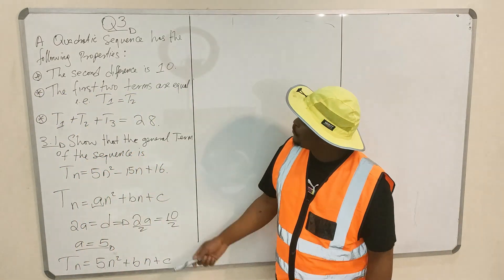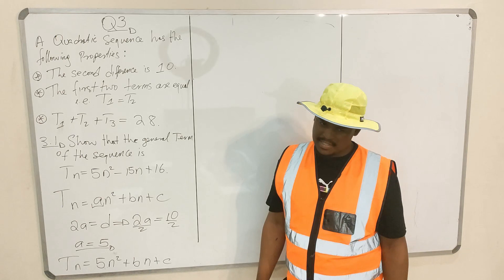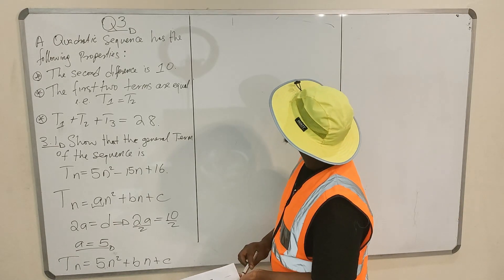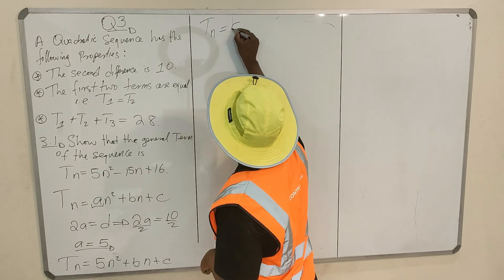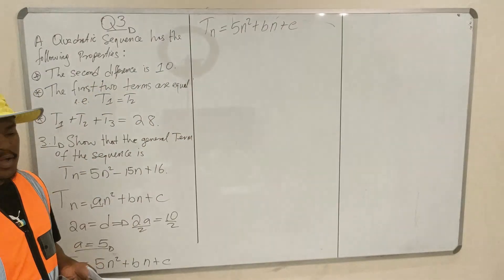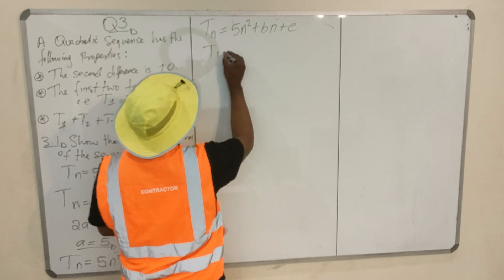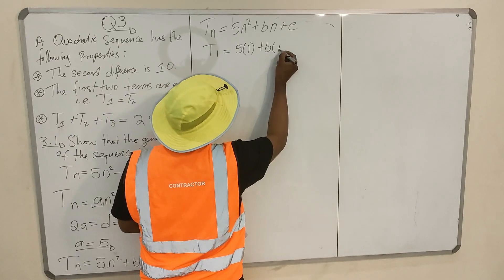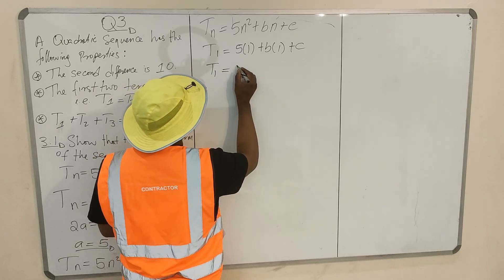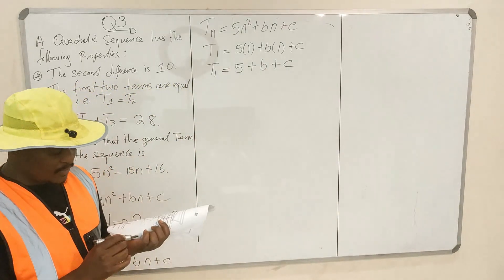On the next property, they told you that the first two terms of the sequence are equal. So, Tₙ = 5n² + Bn + C. We can find the first term: T₁ = 5(1)² + B(1) + C = 5 + B + C. This is your T₁.